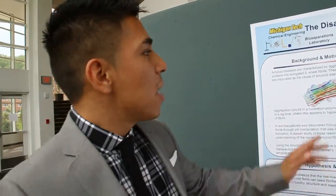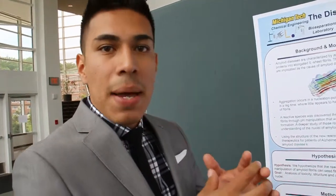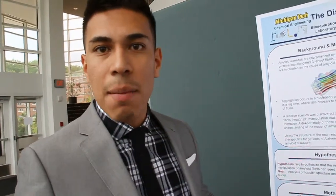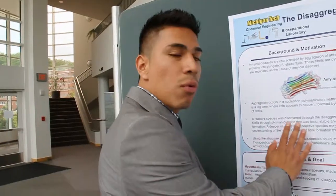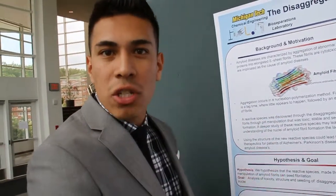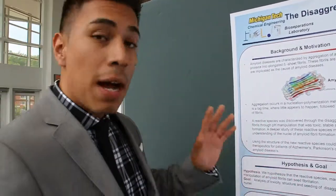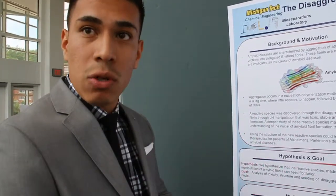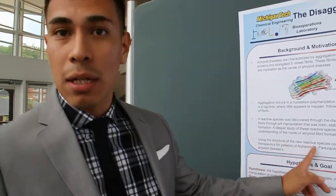In amyloid diseases like Parkinson's or Alzheimer's, there are these toxic fibrils that aggregate together and basically cause degenerative damage in the brain. We're trying to find out what is the toxic nuclei that initiates this fibril formation to occur in the person, understand that, and find a therapeutic for patients.